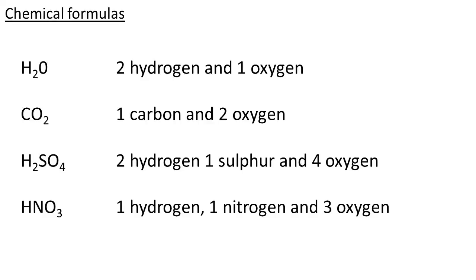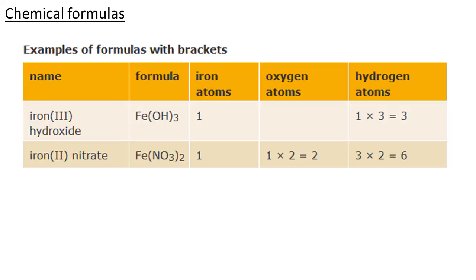There's no number next to that C, so that means there's one carbon atom, and there's two oxygen atoms. And the number goes after the O. H2SO4, that's sulfuric acid. Two hydrogens, one sulfur, because there's no number next to it, and four oxygens. And HNO3, that's nitric acid. One hydrogen, one nitrogen, three oxygens. That should be fairly straightforward.